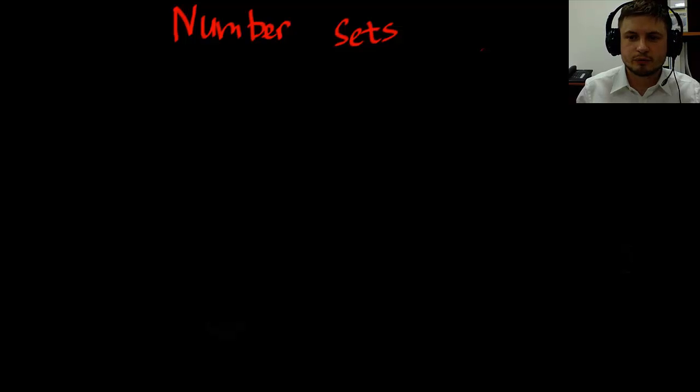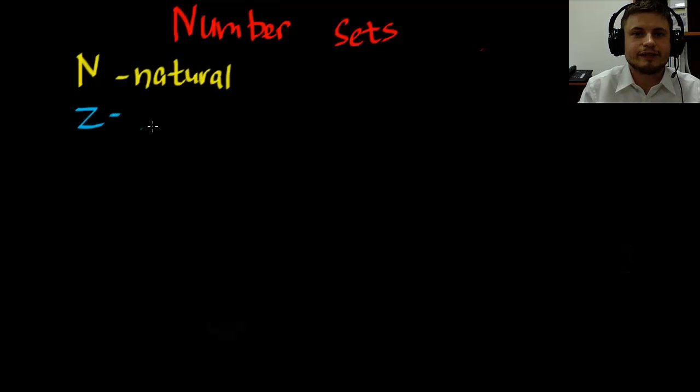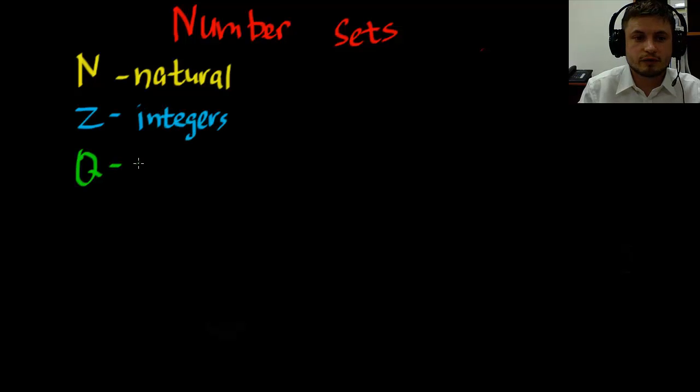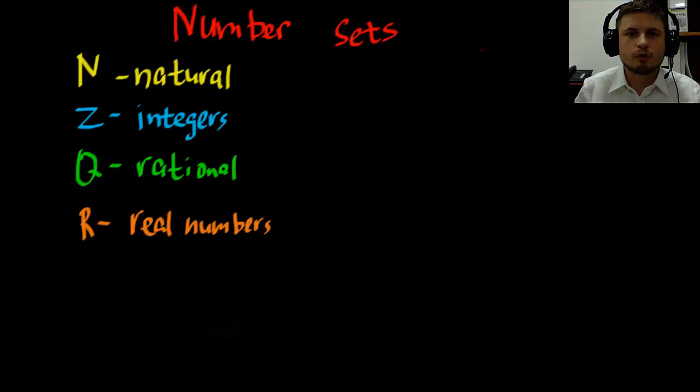There are actually four specific letters that you will see in your book in chapter 1 and they are letter N which stands for natural numbers, letter Z which stands for integers, letter Q which stands for rational numbers, and finally letter R which stands for real numbers. And these are the four most essential number sets that you'll find in IB.